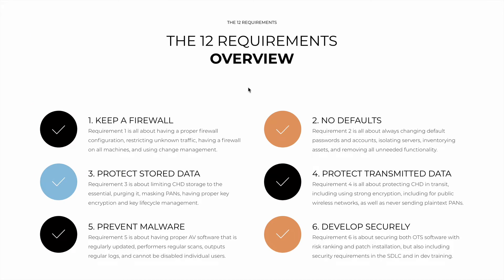Now, the original names are a bit complex, so in practice I've simplified them. These are the names I'll use throughout the course — they help you memorize the requirements with fewer words. I call Requirement 1 'Keep a Firewall': have proper firewall rules, restrict unknown traffic, have a firewall on all machines, and use change management for changing every firewall rule.